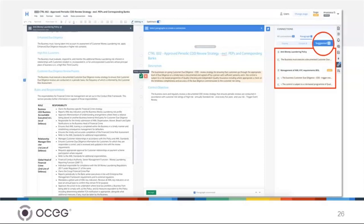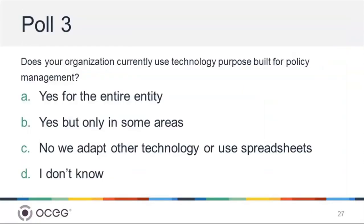I want to stop our conversation while we run our next poll. The question is: does your organization currently use technology that is purpose-built for policy management — meaning something other than spreadsheets or general sharing-type technology? You can say yes across the entire entity, yes but only in some areas, no we adapt other technology or use spreadsheets, or if you don't know just say so. Just make sure you answer the poll.